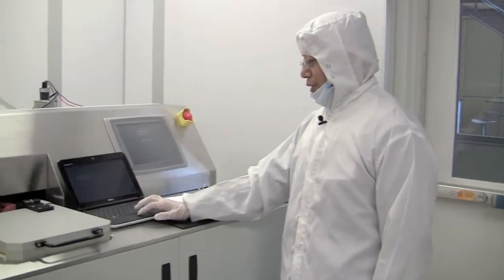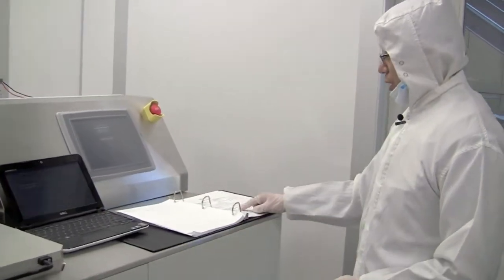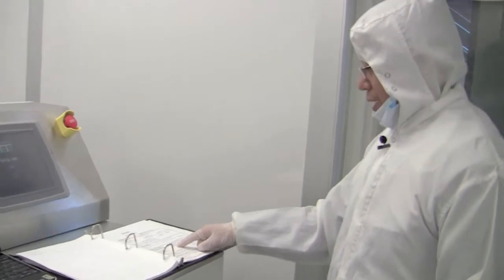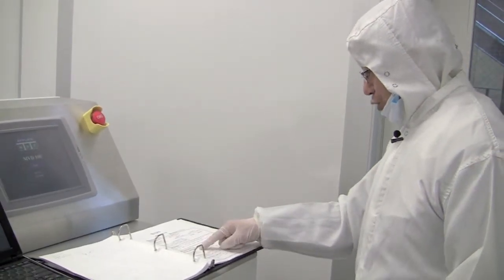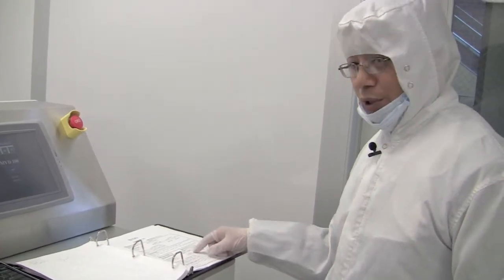We will give you the introduction of nanoimprint in a different video. So this is the logging computer. Before we log into this computer, we should read the log sheet first to check the base pressure and the flow rate. If there are no issues from the former user, we can then log into this computer.